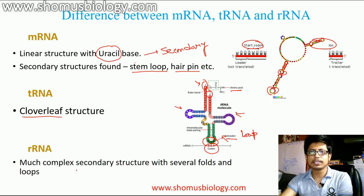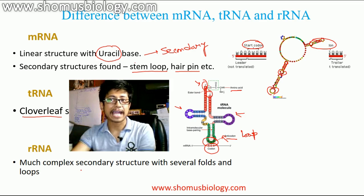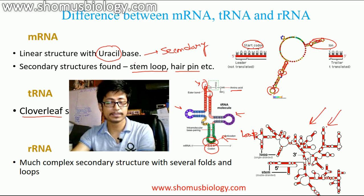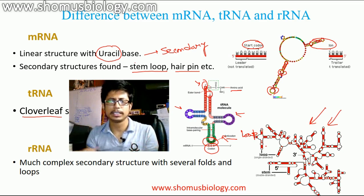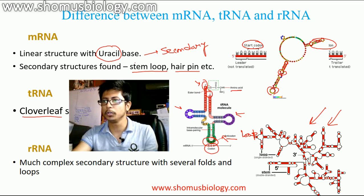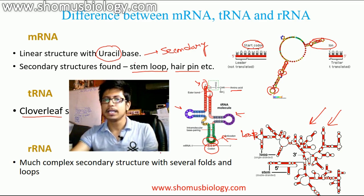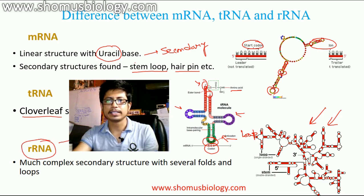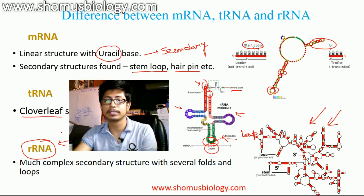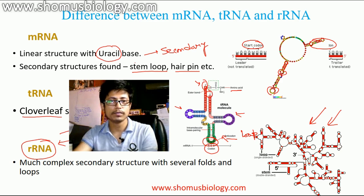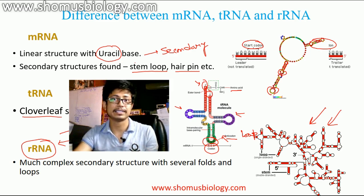If we talk about rRNA, it has a much more complex secondary structure with several folds and loops. The rRNA is much bigger — it is a long structure folded several times, with many bulges, loops, stems, and hairpins forming in different regions. Among these three RNA types, rRNA is the most predominant form inside the cell, because rRNA provides the structural unit and structural base to the ribosome. We require rRNA in very high amounts for the formation of ribosomes, which are the protein synthesis factories.